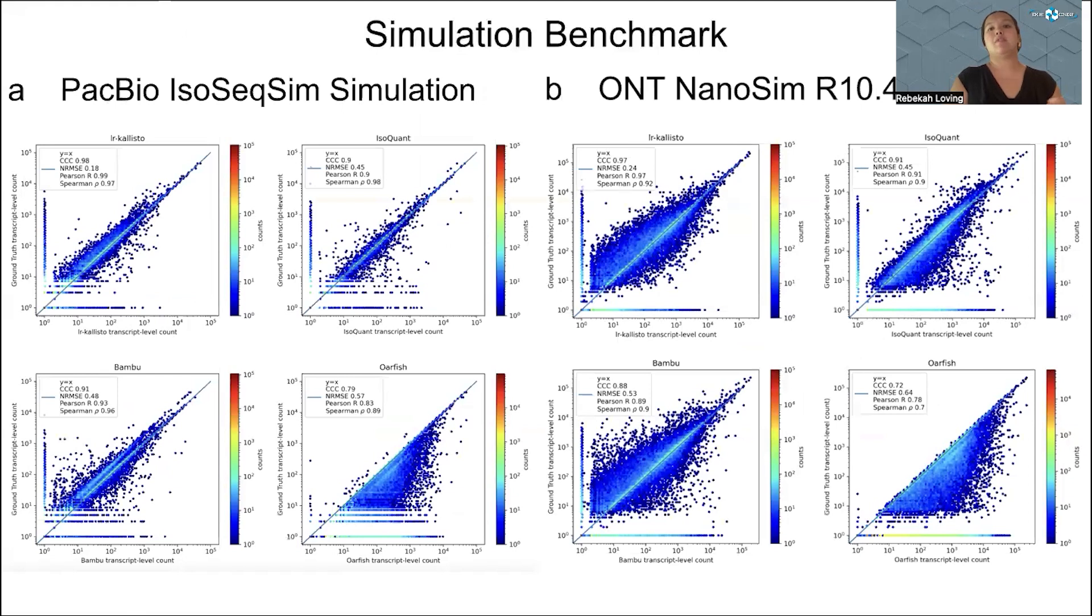Now to look at some of the results. This is on PacBio isoSeq simulation of 6 million reads, and on the right-hand side, it's on an ONT nanoSIM simulation of about 30 million reads. On the y-axis of each of these plots, you have the ground truth transcript level count. On the x-axis, you have the tool estimated transcript level count. We compare LR Kallisto to Isoquant and Bamboo, which are very popular tools, and Oarfish, which is a new tool. You can see that in concordance correlation coefficient, LR Kallisto outperforms all the other tools across both PacBio and ONT. And with normalized root mean squared error, Kallisto also really outperforms the other tools.